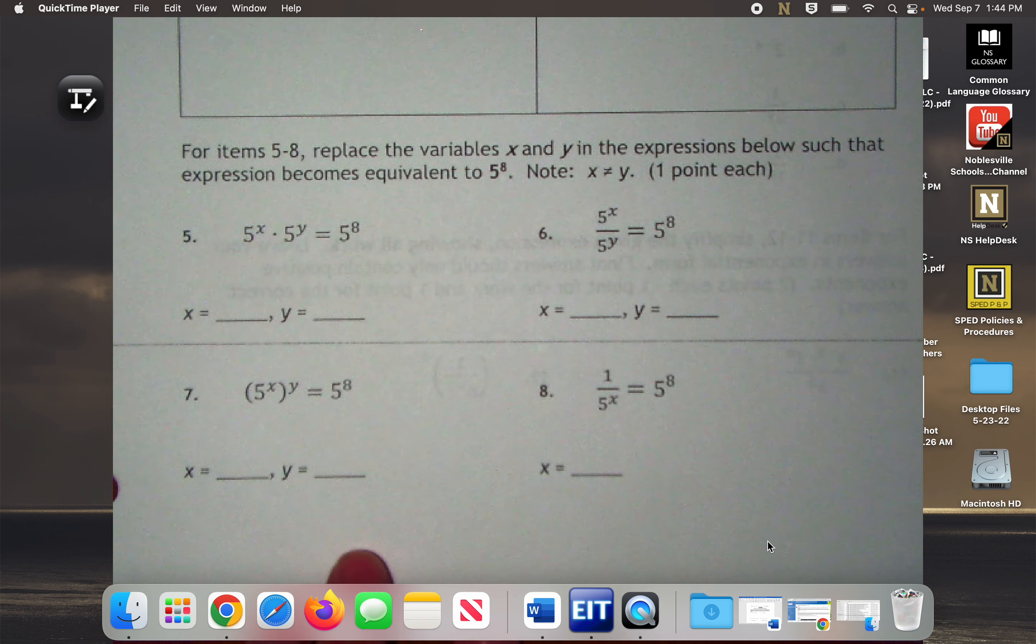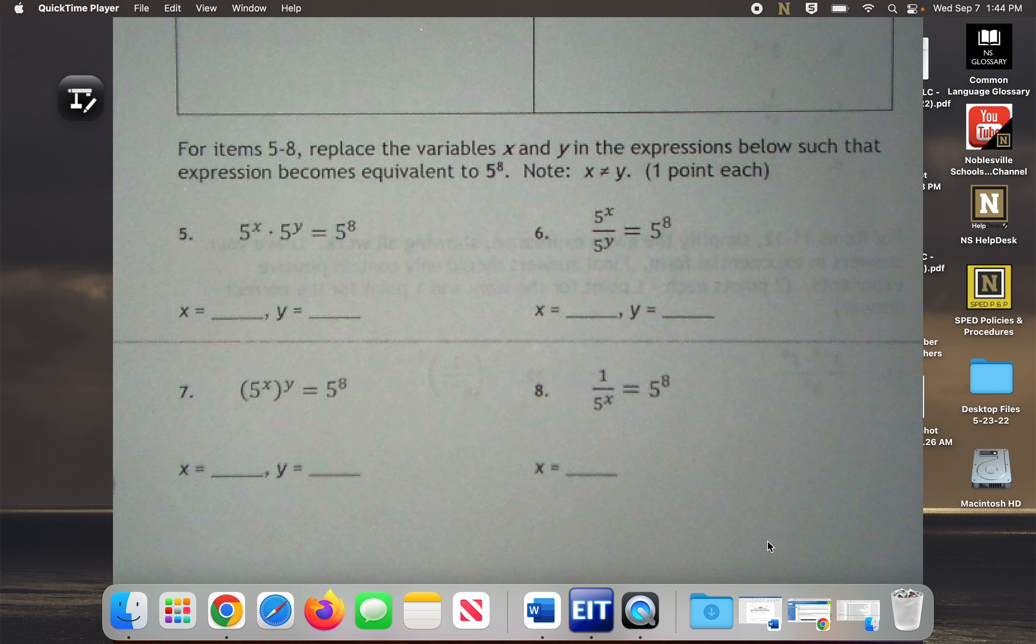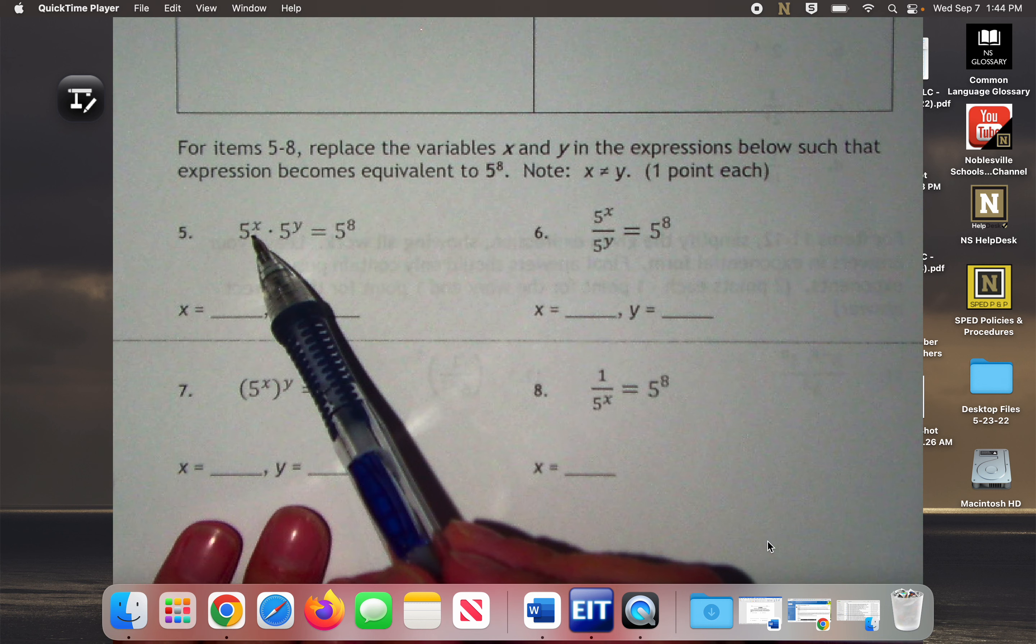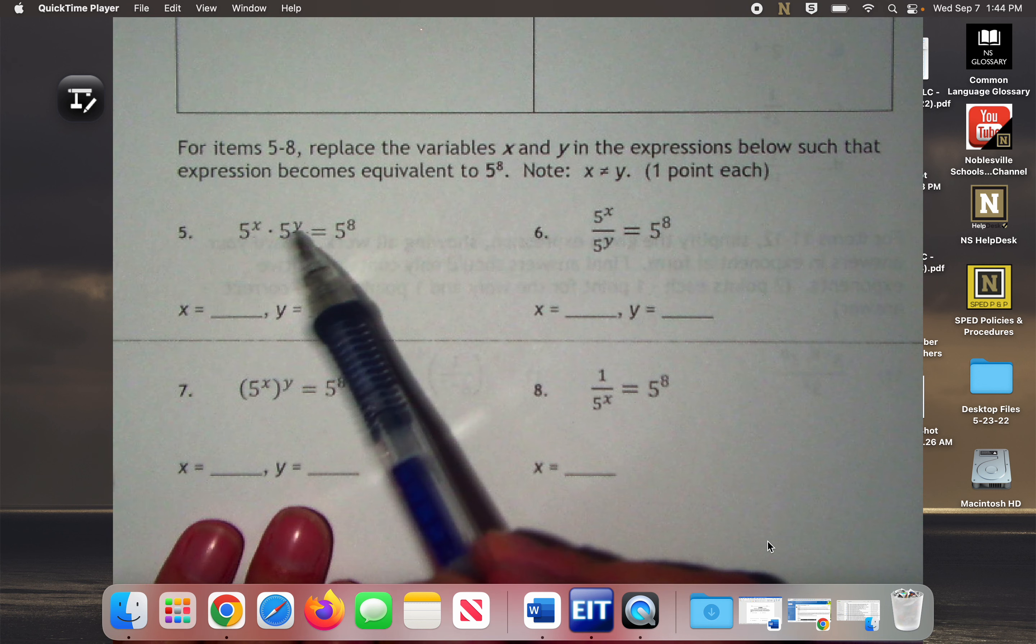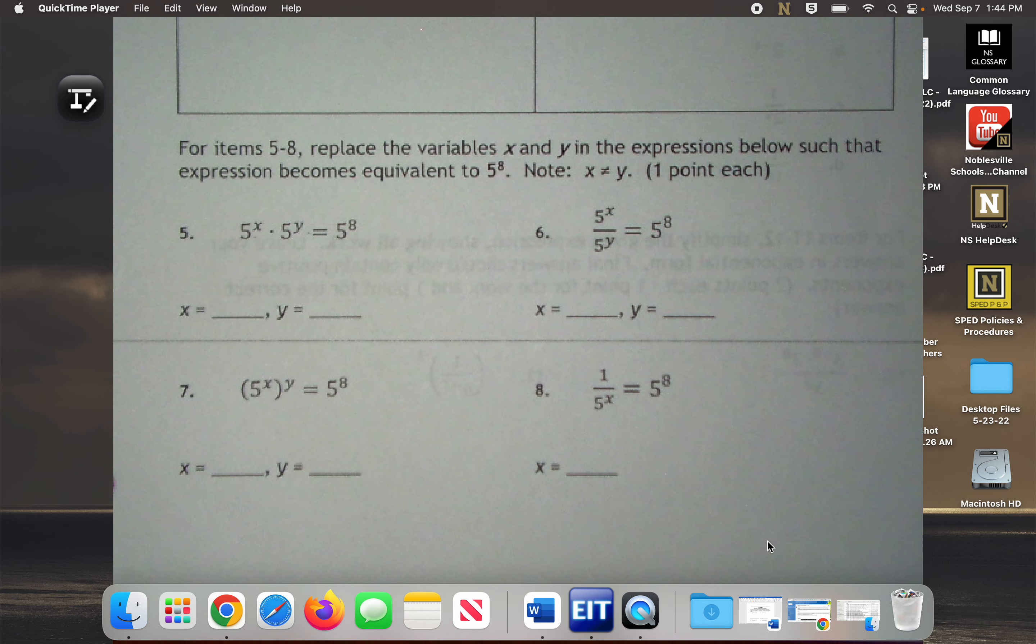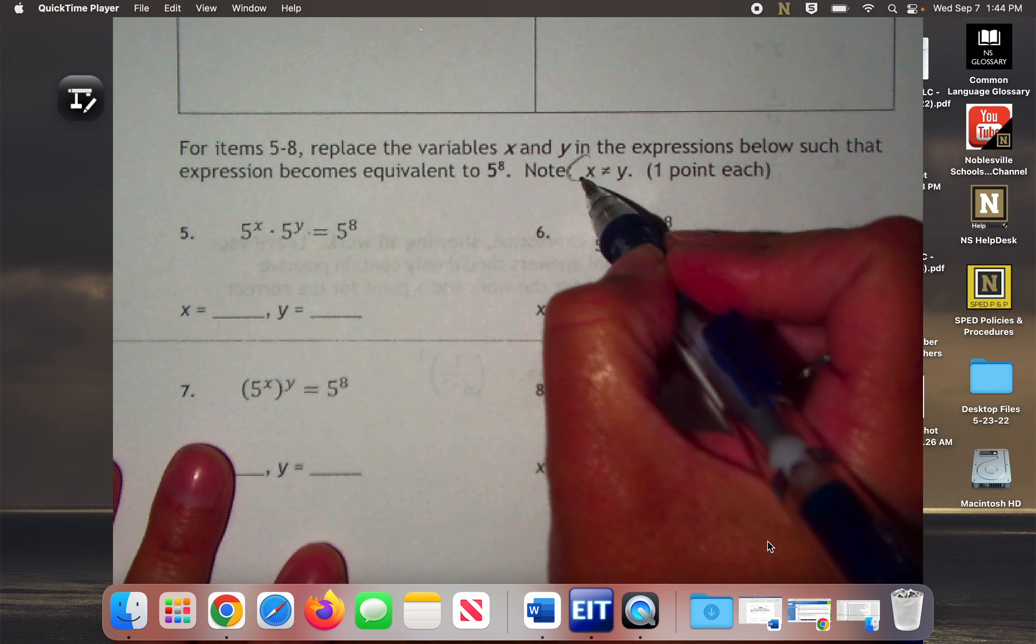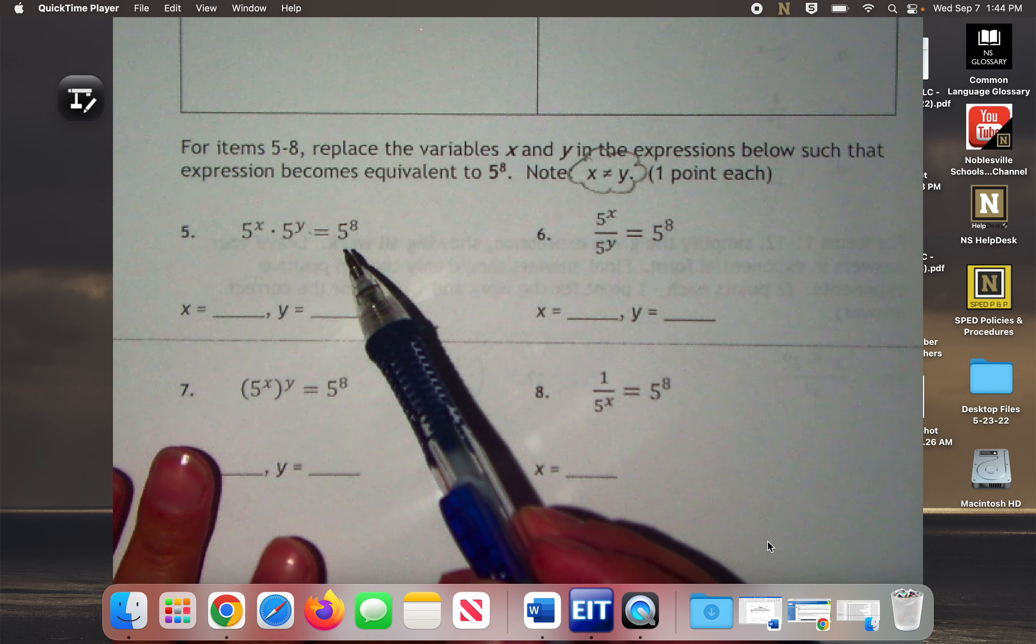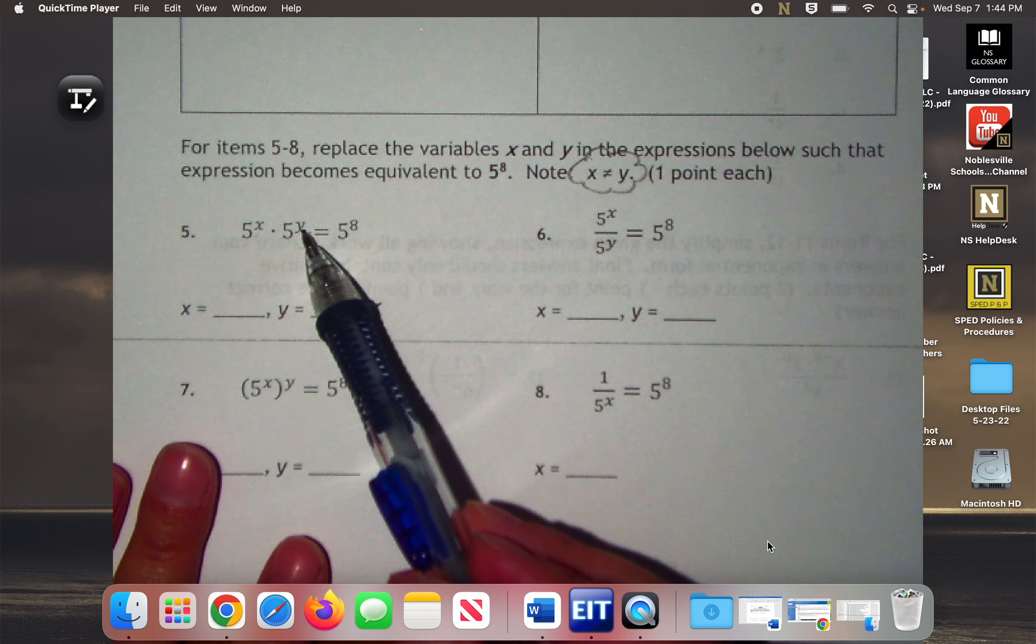Let's look at questions 5, 6, 7, and 8 together right now. These look a lot harder than they actually are. So what you're going to do is you're going to figure out what can X be and what can Y be so that when I use the rule, I come up with 5 to the 8th. The only catch is that X and Y cannot be the same because otherwise we would not need two variables.